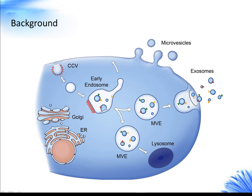Derived from the endosomal compartments called multivesicular bodies (MVBs), exosomes contain diverse nucleic acids, mRNAs and miRNAs, lipids, peptides, and proteins derived from the parent cells. Therefore, exosomes are thought to play an important role in intercellular communications.